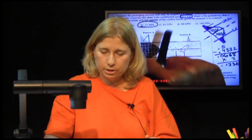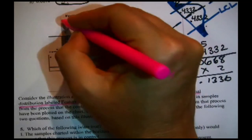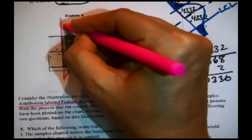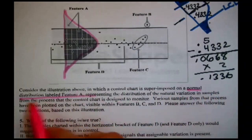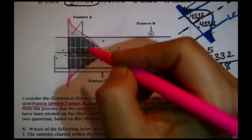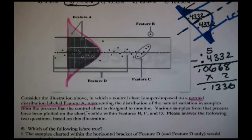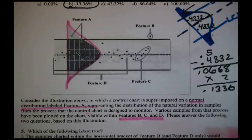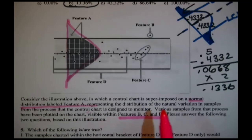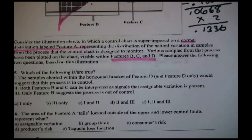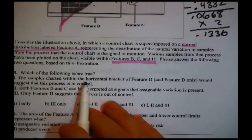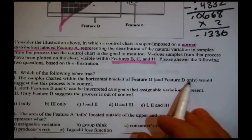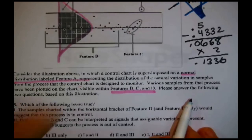Now, last two questions. You know, I sketched this thing and then there was this diagram that looks quite similar. It didn't refer to this question. It referred to these two old questions, but you see that same natural distribution. And here's a control chart right there. What is being asked? Consider the illustration above. Yes, we were just doing that. In which a control chart is superimposed on a normal distribution labeled Feature A. Feature A. Yeah, here's the normal distribution. In case you're having a hard time seeing it. Representing the distribution of natural variation in samples from the process, the control chart was designed to monitor it. That's exactly what I was sketching for Toby's problem. Now, what are we supposed to do with this? Various samples from that process have been plotted on the chart. That's what the dots are. Visible within features B, C, and D. Please answer the following two questions based on this illustration.